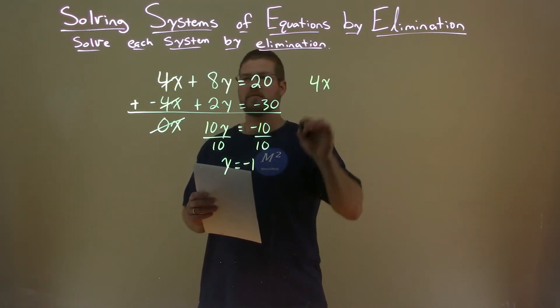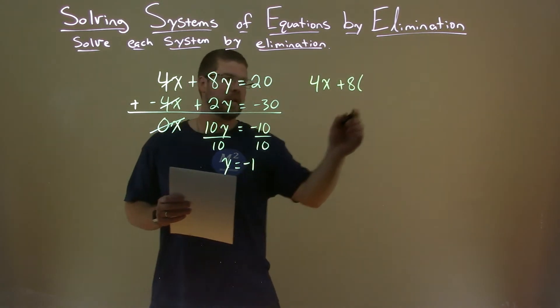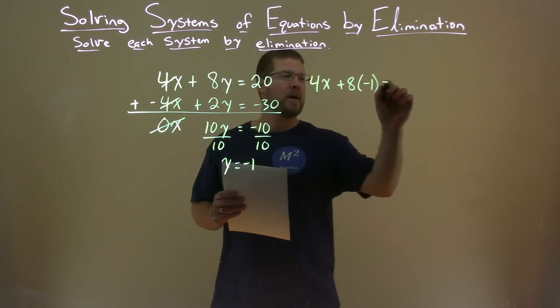So I take the first equation, 4x plus 8, and instead of y, I'm going to substitute negative 1. And we have equal 20.